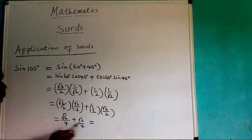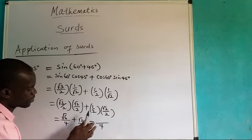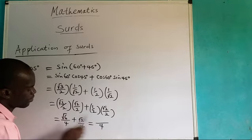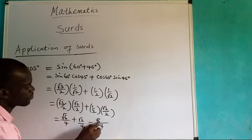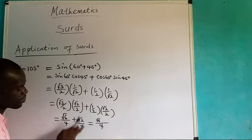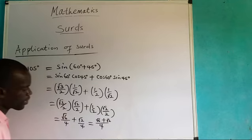I have to now take the LCM. The LCM of 4 and 4, I will have 4. If you have 4, I will now say 4 divided by 4 is 1 times root 6. I will have root 6. 4 divided by 4 is 1 times root 2. I will have root 2. We can still move on.